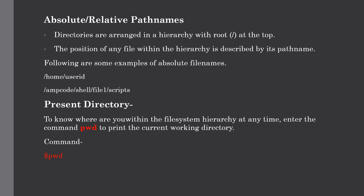Our next topic is absolute and relative path names. Directories are arranged hierarchically with the root at the top. The position of any file within the hierarchy is described by a path name, and elements of the path name are separated by the slash symbol. A path name is absolute if it is described in relation to the root, so absolute paths always begin with a slash. Path names can also be relative to your current working directory — relative paths never begin with a slash.